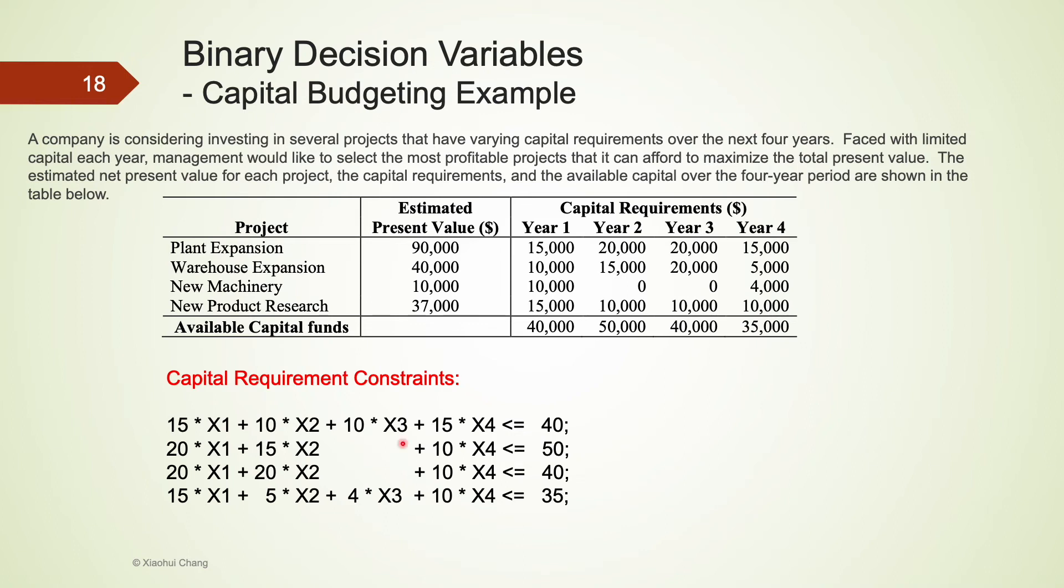By using the same idea we used for the objective function, we have the capital constraint for year 1 to be 15 multiplied by x1 plus 10 multiplied by x2 plus 10 multiplied by x3 plus 15 multiplied by x4 less than or equal to 40, which is the capital constraint. Please pause the video here to see whether you are able to write the remaining three constraints for year 2, year 3, and year 4 respectively.